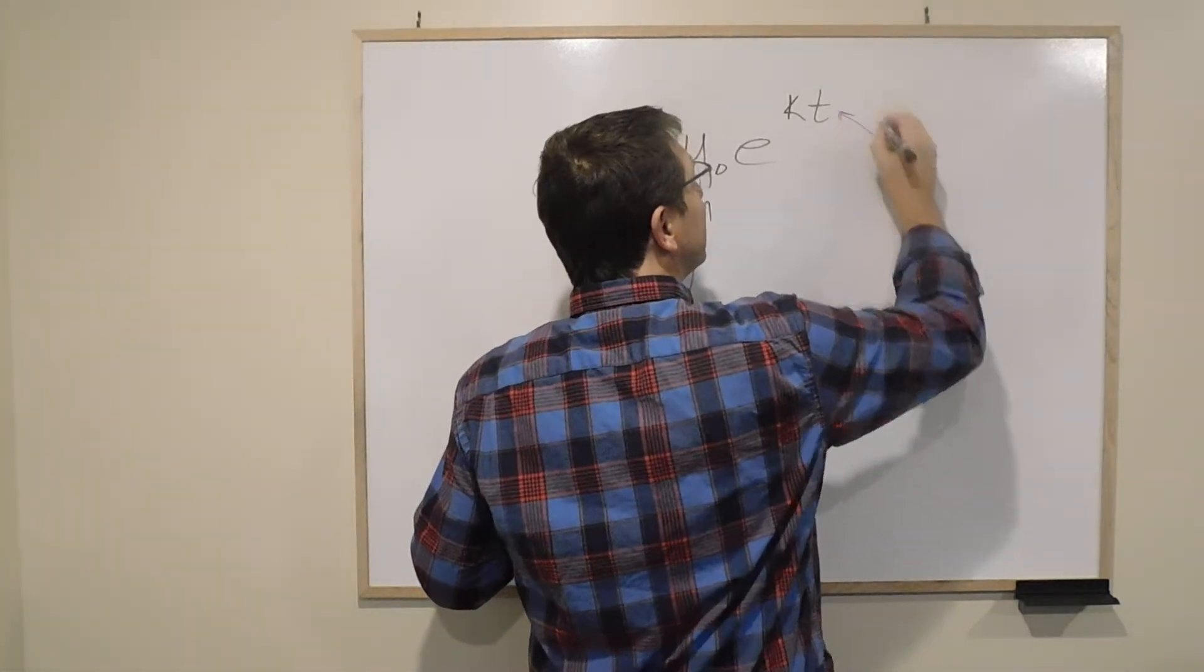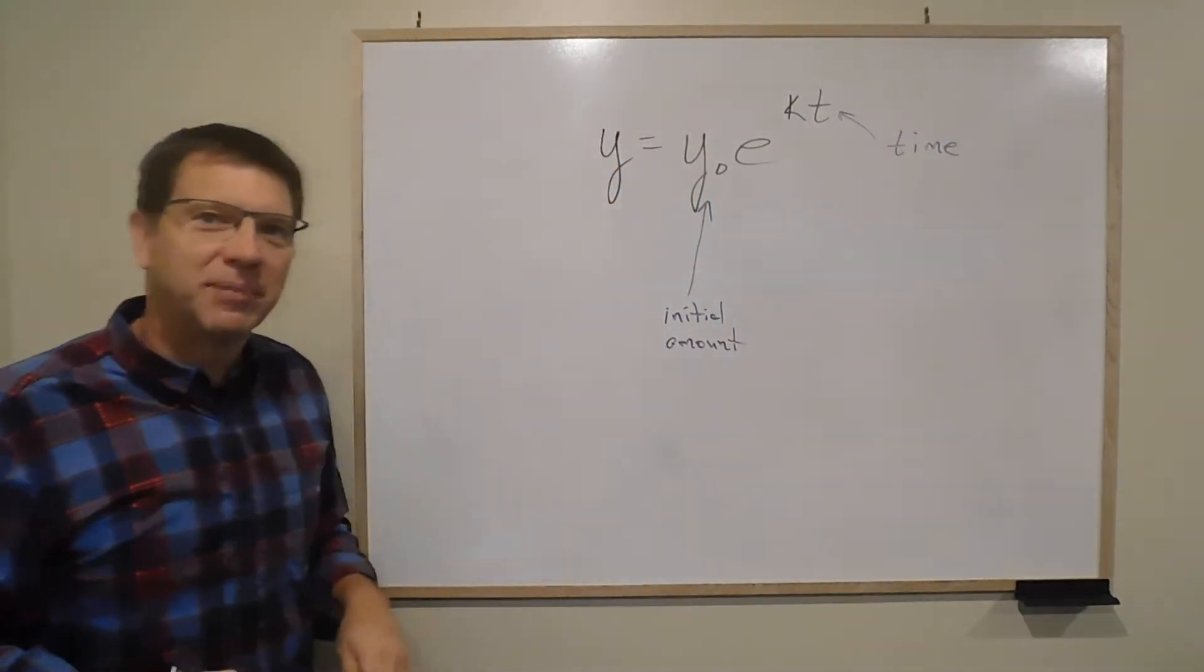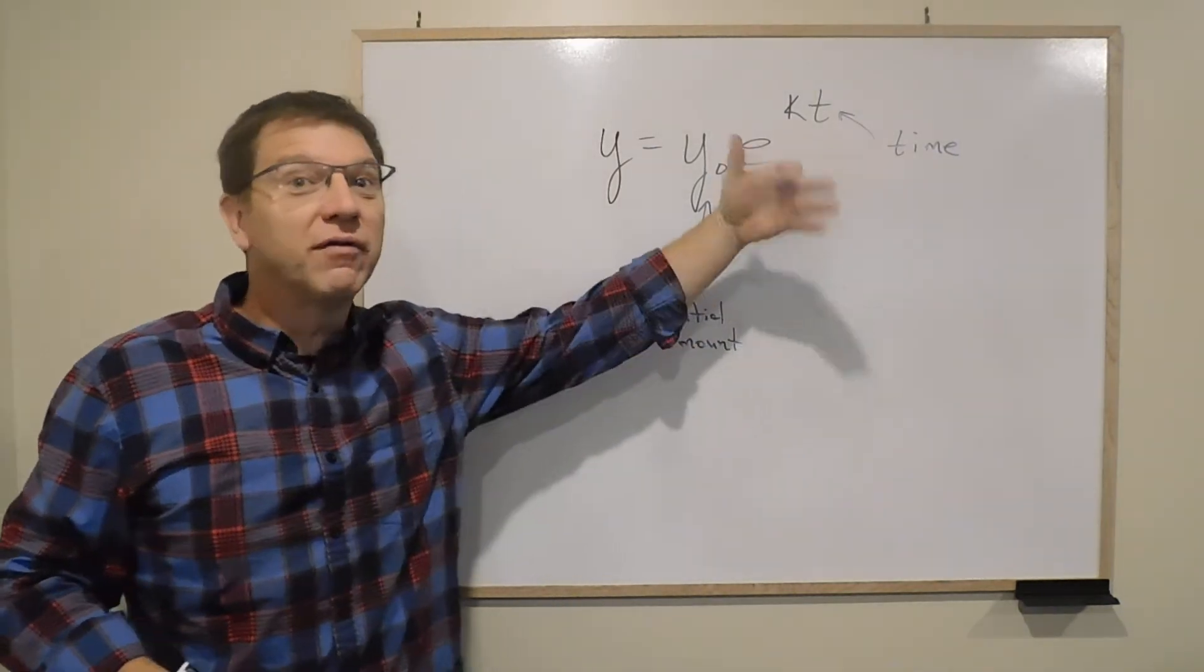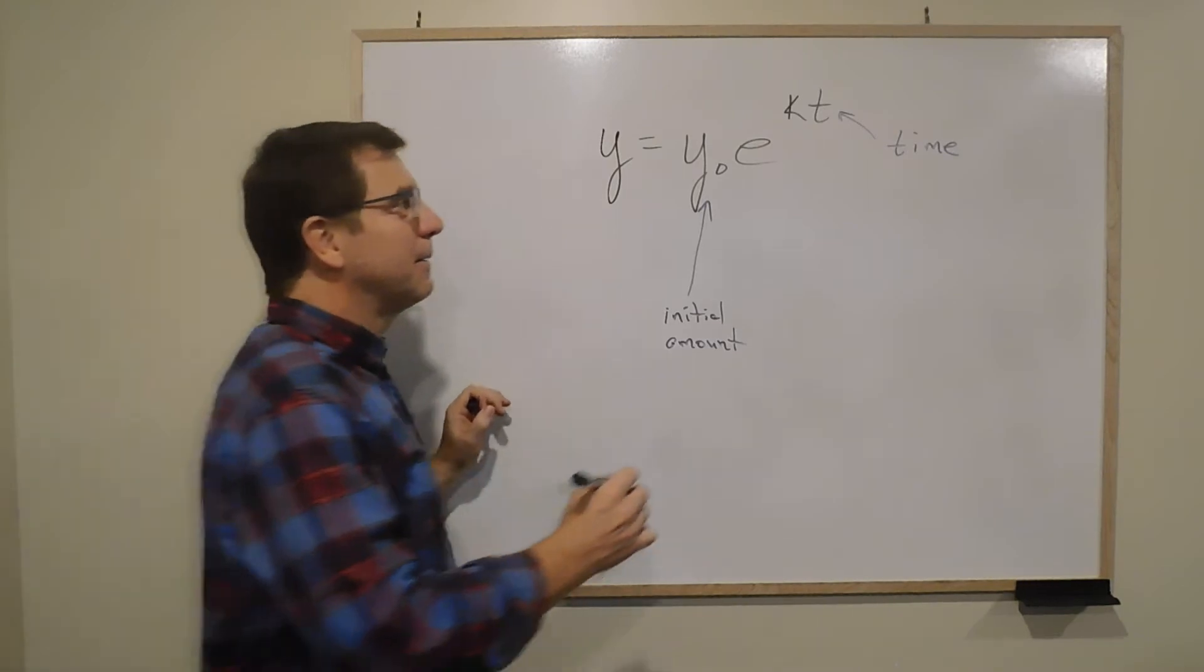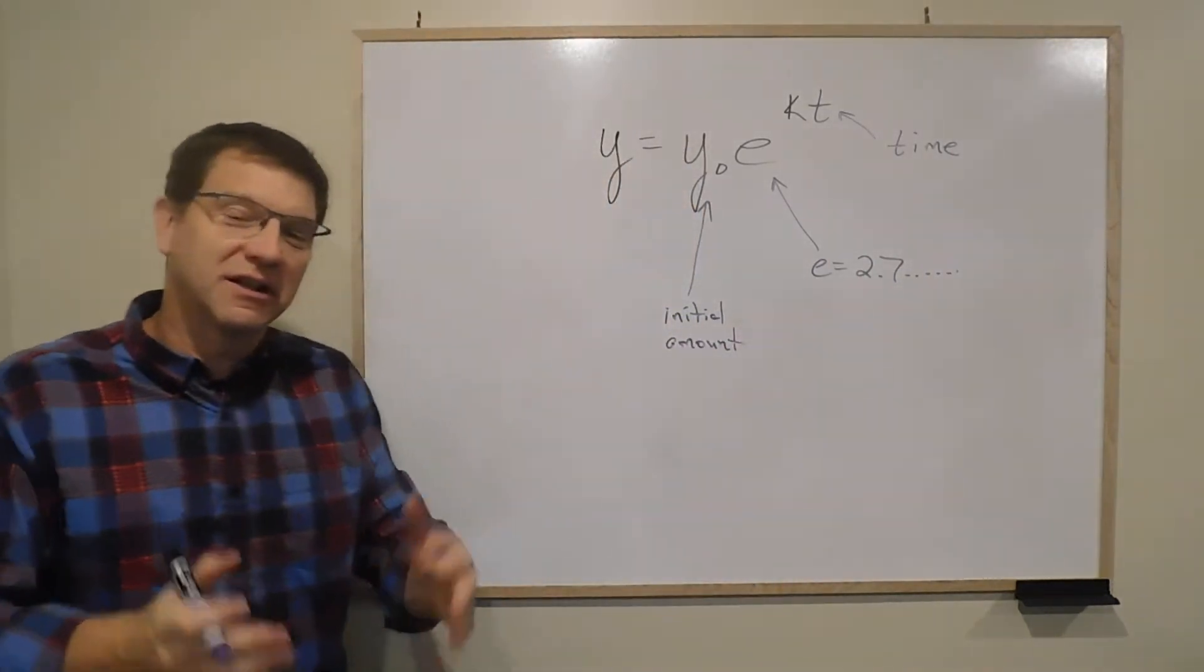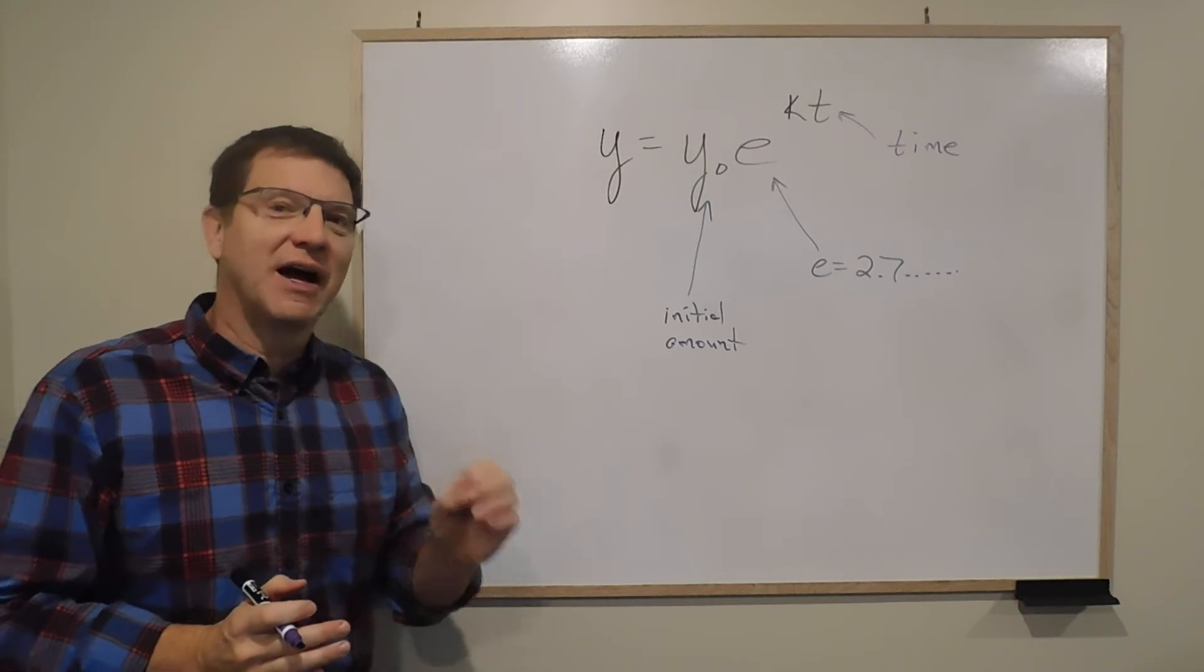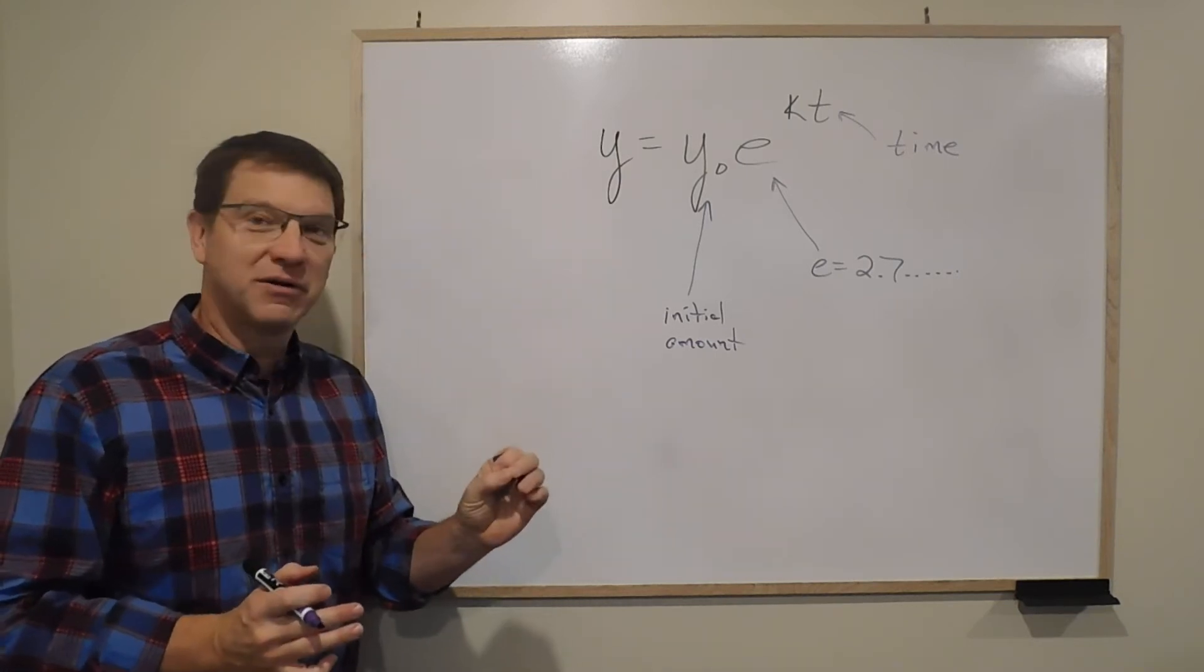T is time. How much time has passed? It's your initial amount. Time is zero, but over time, it grows or it decays. And E, well, that's your 2.7, whatever. That's your constant that we just talked about last slide. So that doesn't change, and you actually have a calculator button with an E, so you don't have to worry too much about that.